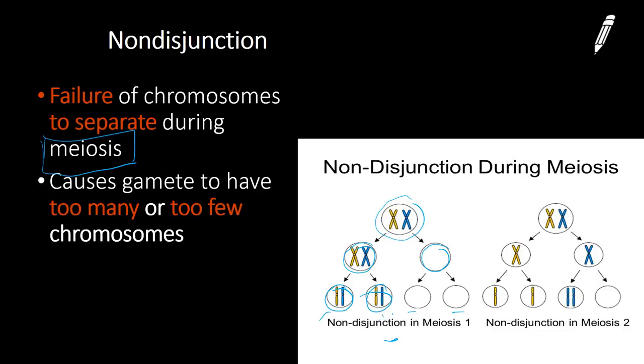Now if we look over here at non-disjunction during meiosis two, we can see that it separates perfectly here in meiosis one. However, during meiosis two, those two separate properly, but this one takes two chromosomes and this one gets zero chromosomes. So this gamete would have an abnormal number of chromosomes. So essentially, when there's too many or too few chromosomes in a gamete, that's non-disjunction.